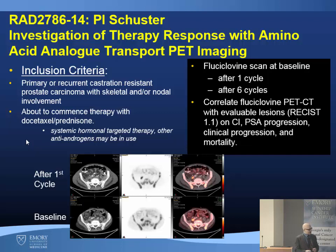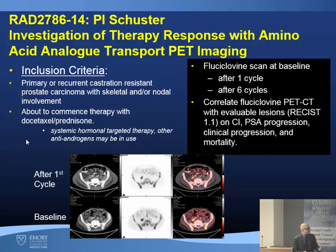Another study just getting off the ground, done with colleagues in medical oncology, looks at whether fluciclovine can show changes in therapy. We're taking primary recurrent castration-resistant prostate cancer patients with skeletal and/or nodal involvement about to commence docetaxel and prednisone. They get scans at baseline, after one cycle, and after six cycles, correlating with markers of outcome.